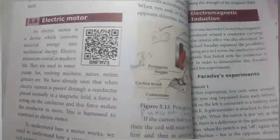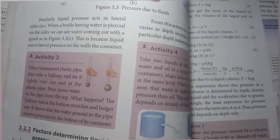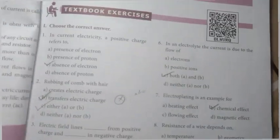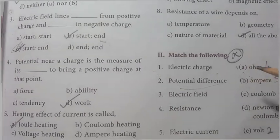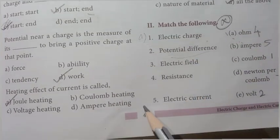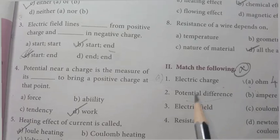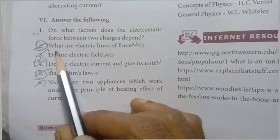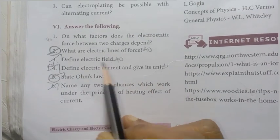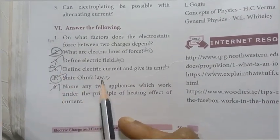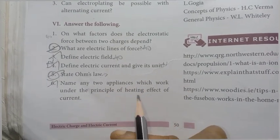First, page number 39. The lesson is electric charge and electric current. One mark questions: choose the correct answer, match the following. Then: what are electric lines of force? Define electric field. Define electric current and give its unit. State Ohm's law.